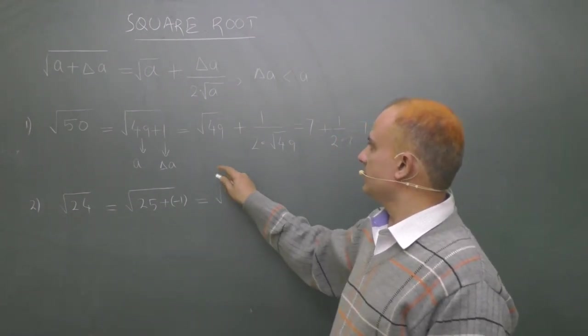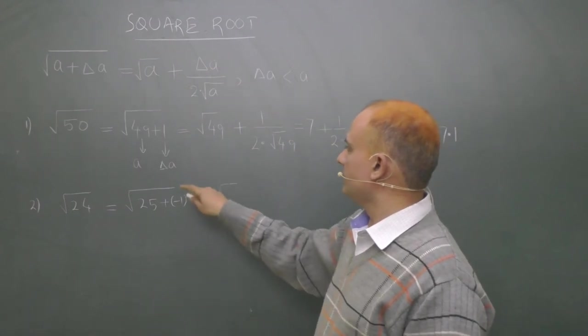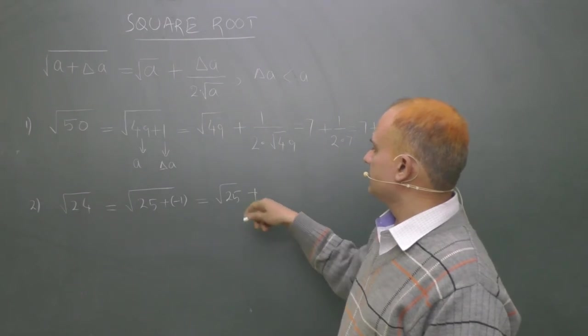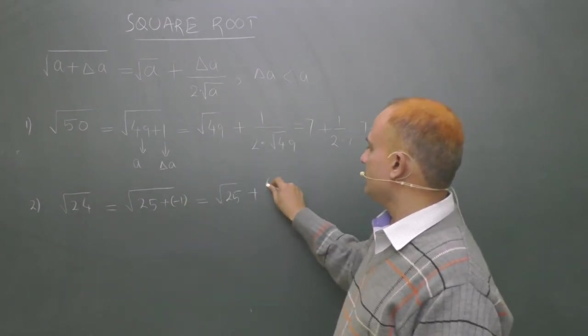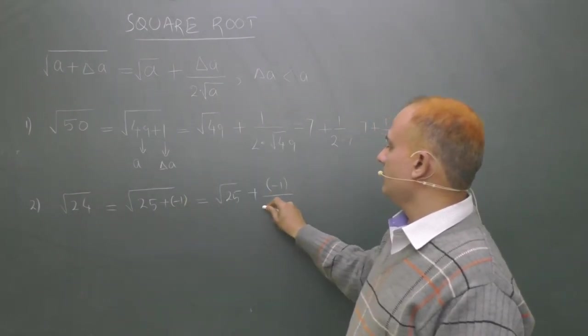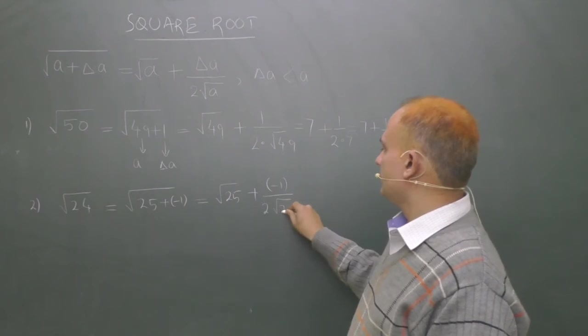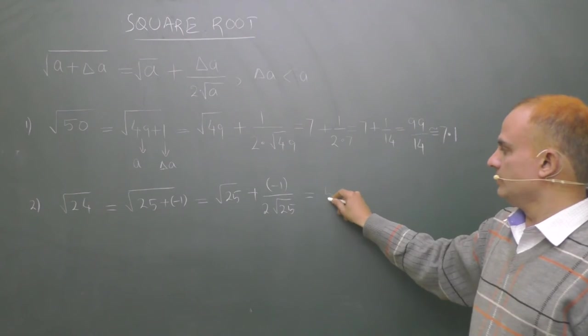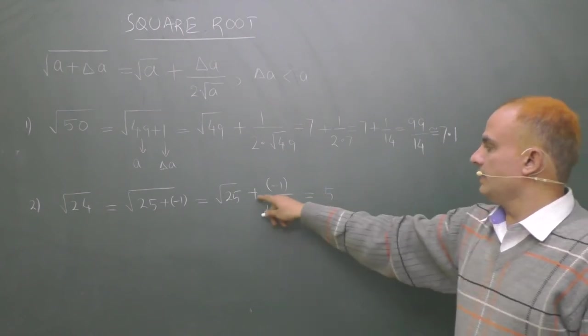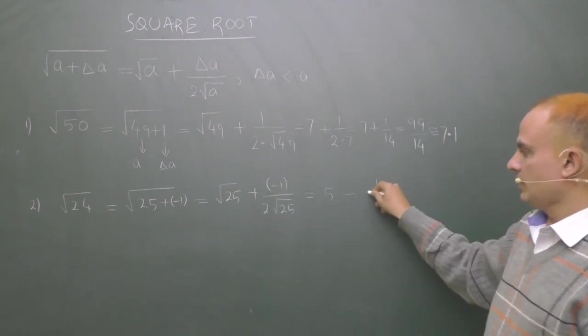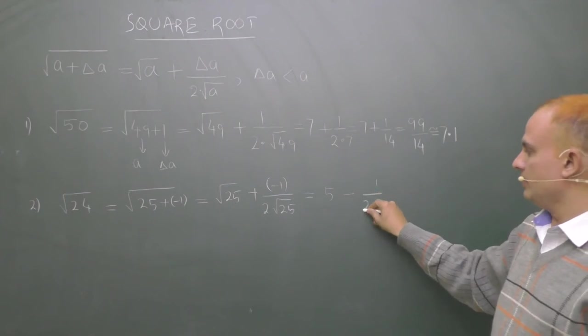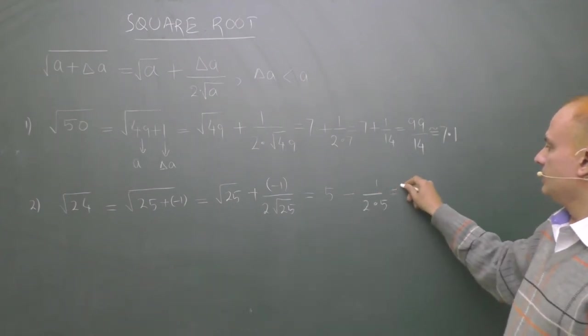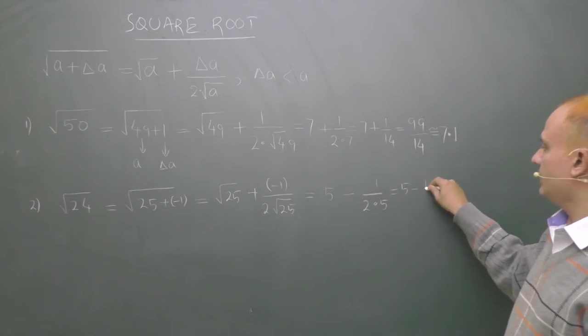So its square root will be root over a, means root over 25, plus delta a is what? Minus 1 upon 2 into square root of 25. Root of 25 is known to you. 5 plus, into minus is minus, 1 upon 2 into square root of 25 is 5. 5 minus 1 upon 10.